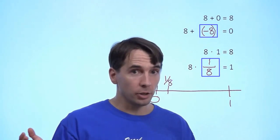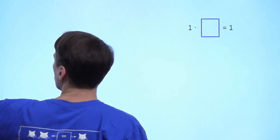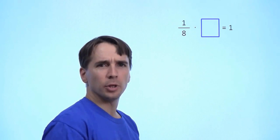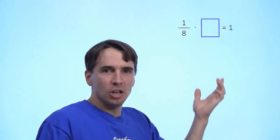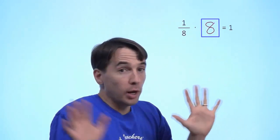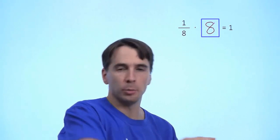We can do this with almost any other number. The reciprocal of 2 is 1 over 2. The reciprocal of 1: 1 times 1 equals 1, so the reciprocal of 1 is 1. Now what about the reciprocal of a reciprocal? What do I multiply 1 over 8 by to get 1? Well, we just defined 1 over 8 as the number you multiply 8 by to get 1, so 1 over 8 times 8 is 1. Therefore, the reciprocal of 1 over 8 is just 8. The reciprocal of the reciprocal of a number gives you the number back.